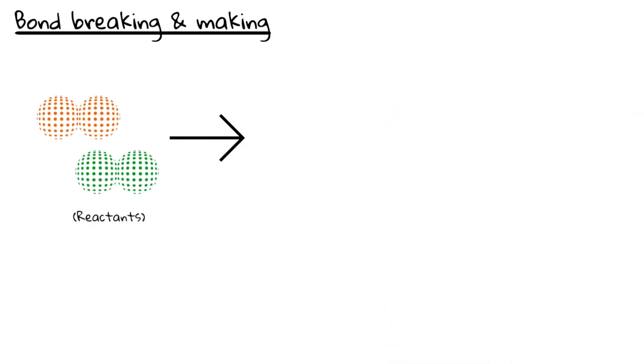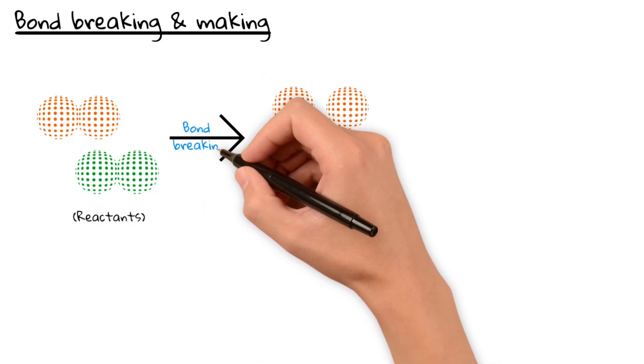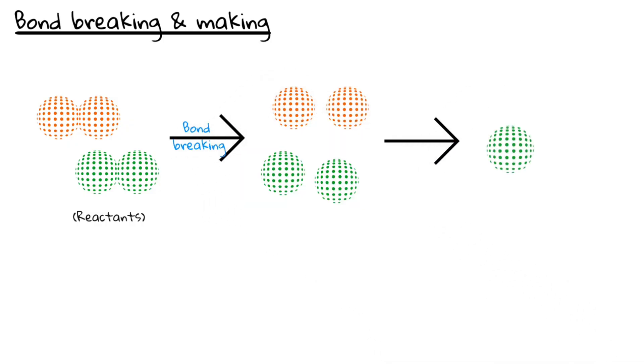For a chemical reaction to occur, the bonds holding atoms together in the reactants must first be broken. After that, the atoms rearrange and form new bonds to make the products.